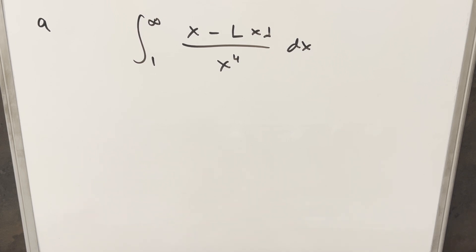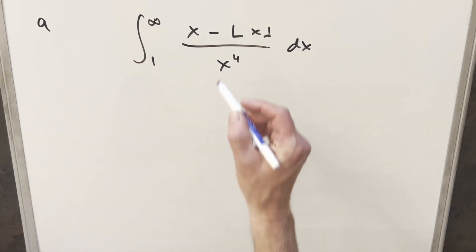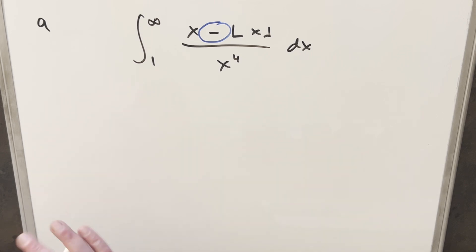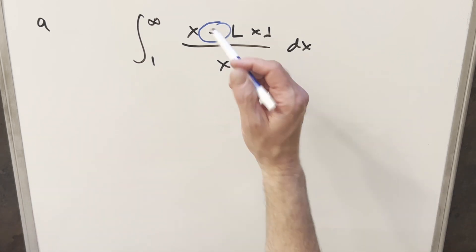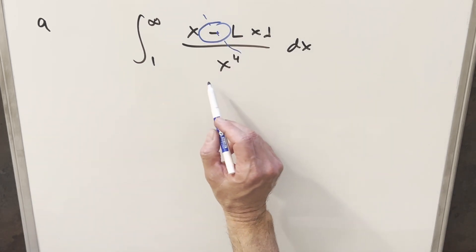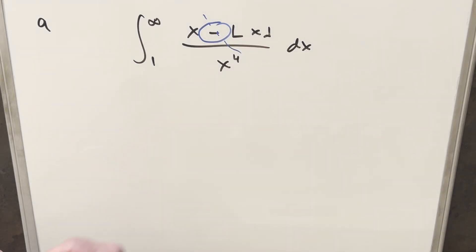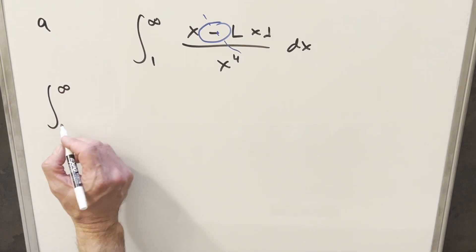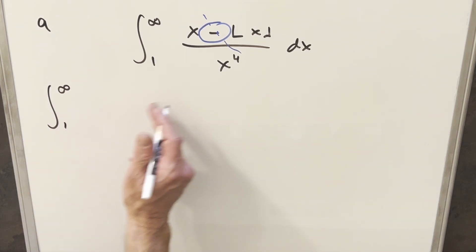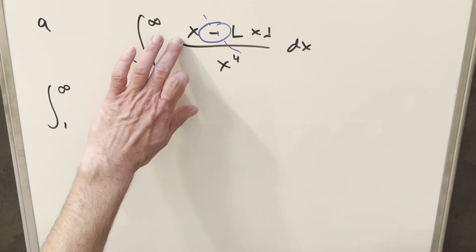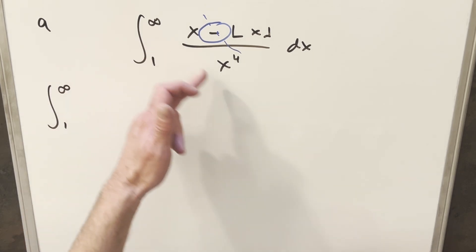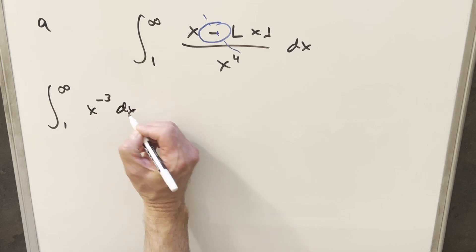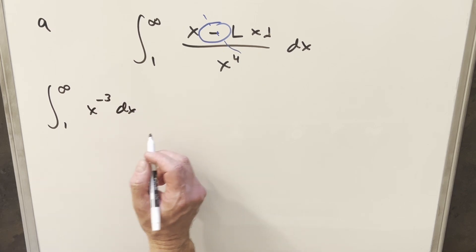I'm not quite ready to deal with the floor function yet, but what we can do — just because we have a minus sign here — we can split this up into two integrals. The first one is going to be pretty easy. We're going from one to infinity, and for x over x to the fourth, that's going to be one over x cubed. I'll write that as x to the minus three dx so that we can use the power rule.